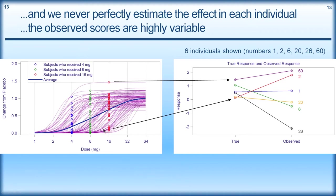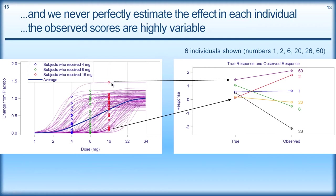To understand this: even at 16 milligrams, we may believe there is a true value for each individual. But when we run the study, the response we observe won't be exactly the same as that true value. If we add in the types of variability we might see on a clinical endpoint, this individual may have given a response of 2 rather than 1.5, and an individual who isn't responding at all may give a very positive observed result. The variability shown here is actually very small compared to the types we see in these endpoints — these endpoints are typically extremely noisy.